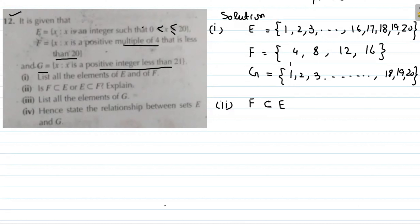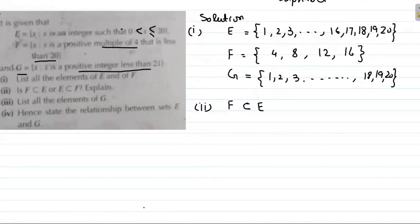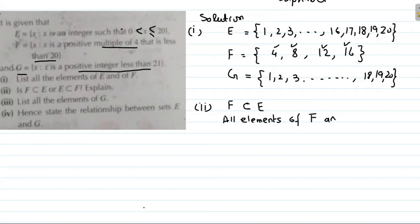All elements of F — 4, 8, 12, 16 — are present in E (since E contains all integers from 1 to 20 continuously). So F is a subset of E. We write: all elements of F are present in E. Now, is E a subset of F? No — because not all elements of E are present in F. For example, 1 and 2 are not in F.